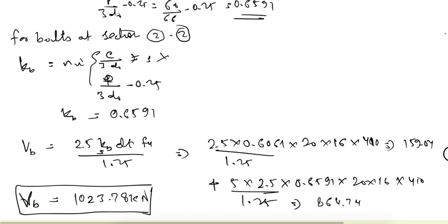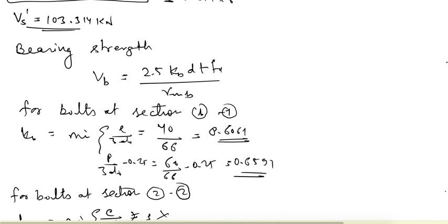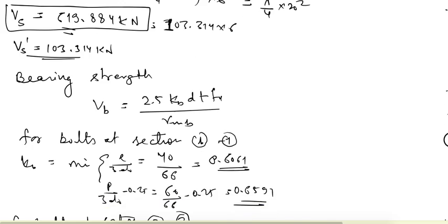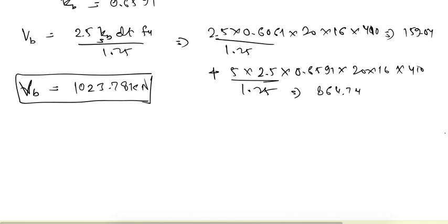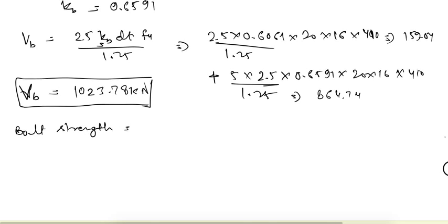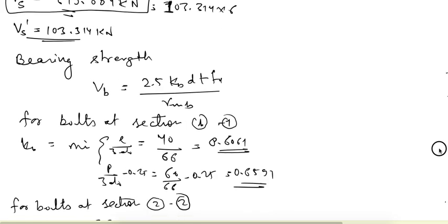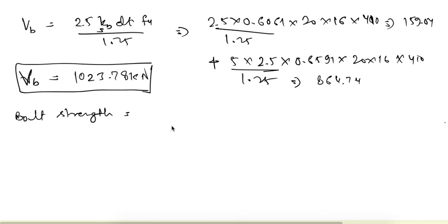We have now obtained both the bearing strength and shear capacity for the bolts. The shear capacity is less, so that defines our bolt strength, which is 619.884 kN.